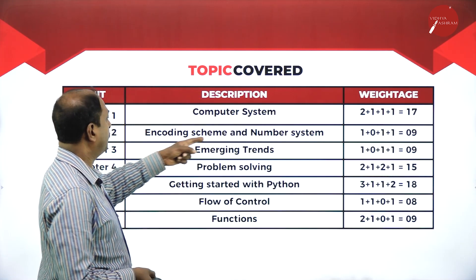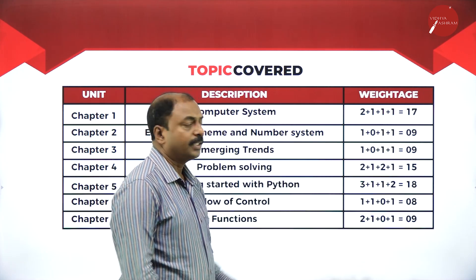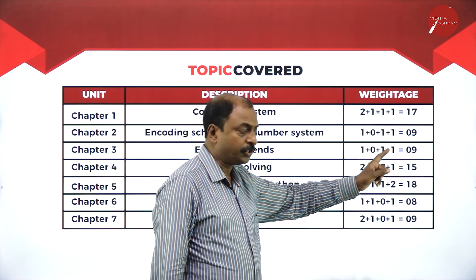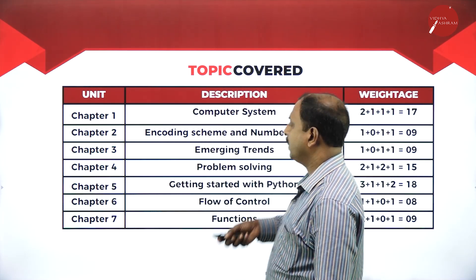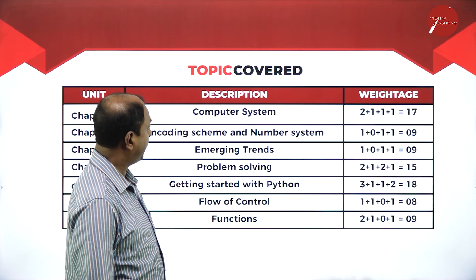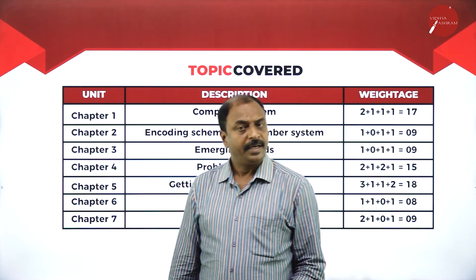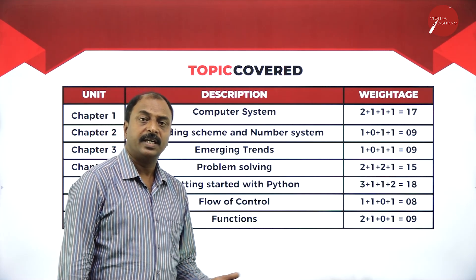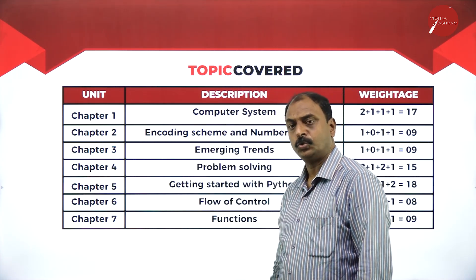Chapter 2 is Encoding Scheme and Number System, with a weightage of one MCQ, one three-mark question, and one five-mark question — totaling nine marks. In this chapter, we learn coding systems like ASCII, EBCDIC, and Unicode, along with number systems such as binary, decimal, hexadecimal, and octal, including conversions between them.